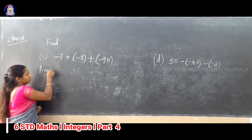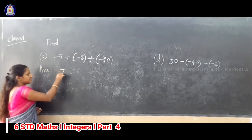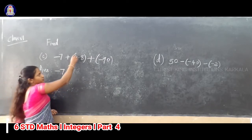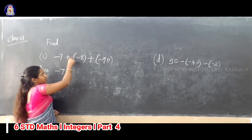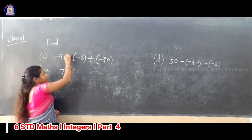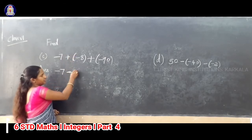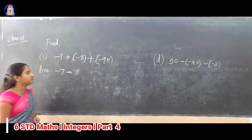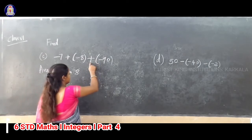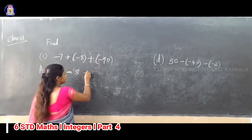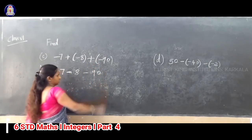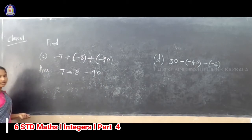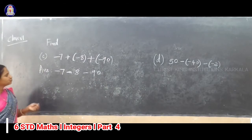Now, the sum is minus 7, as it is. Next, we have to remove this bracket. So multiply plus into minus — minus, so minus 8. Again, multiply the sign plus into minus, so minus 90. So now we have minus 90, minus 8, minus 7.